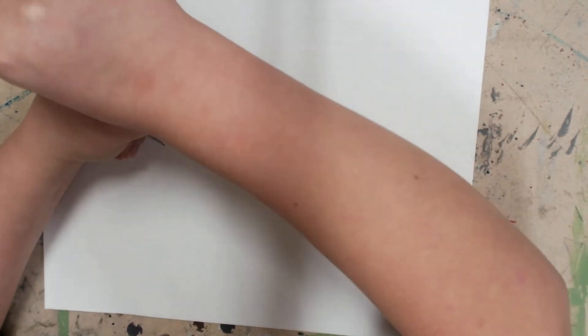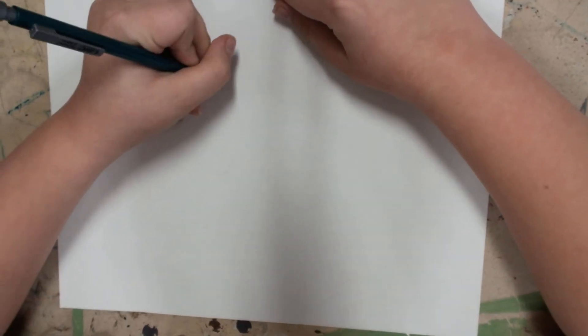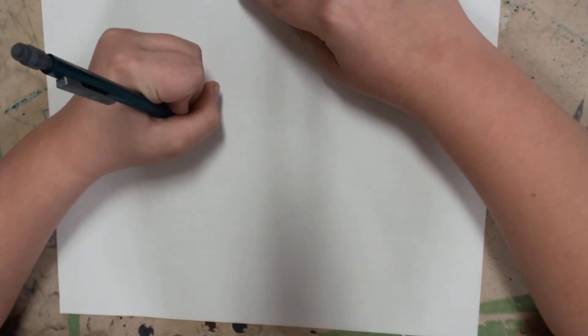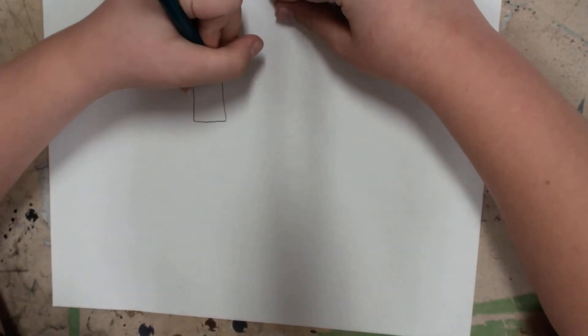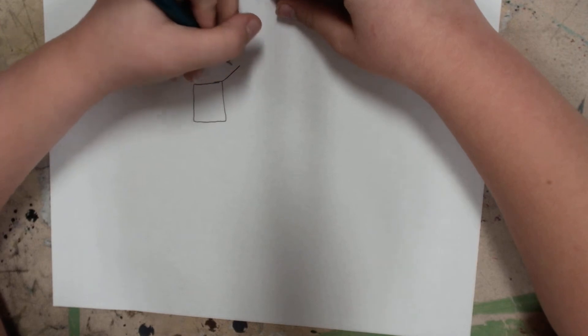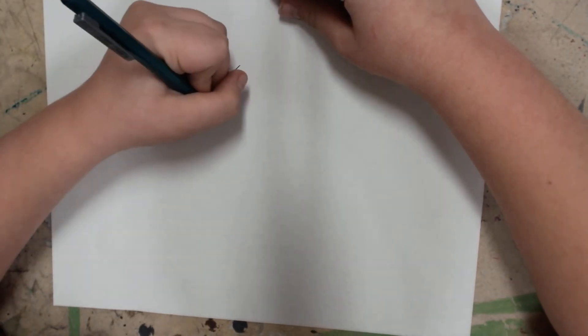First off, you're going to start off with a square. And then a little diagonal line, make that two.